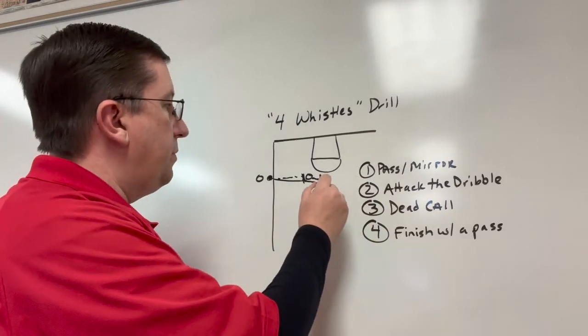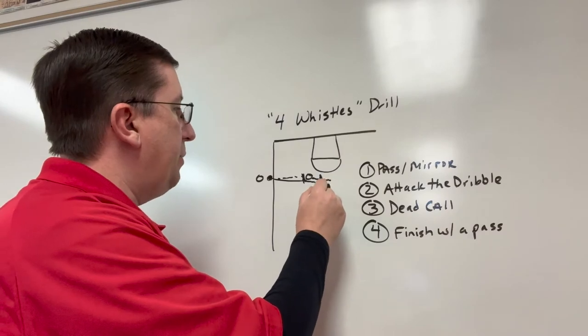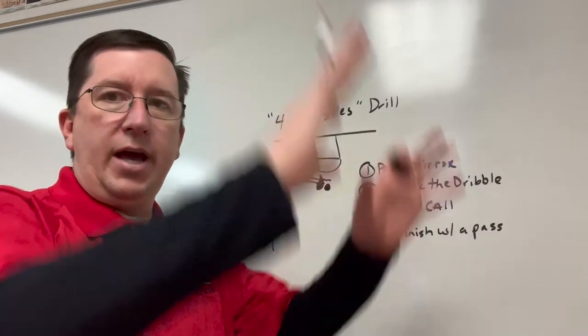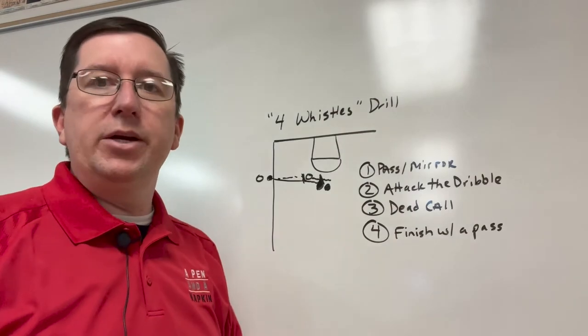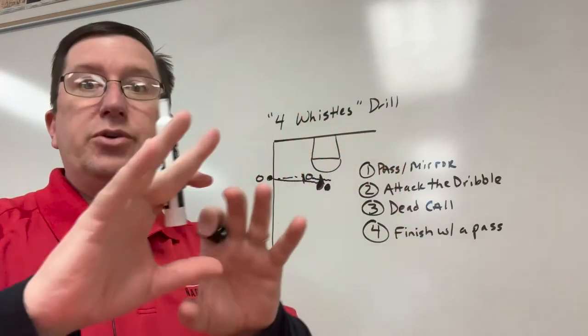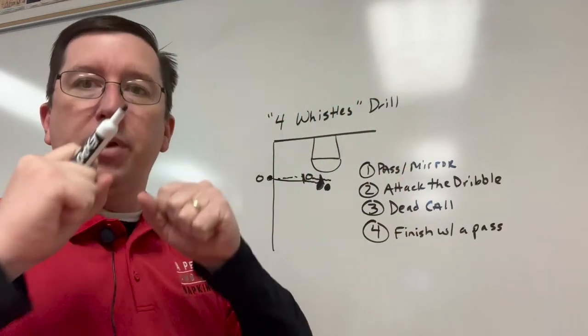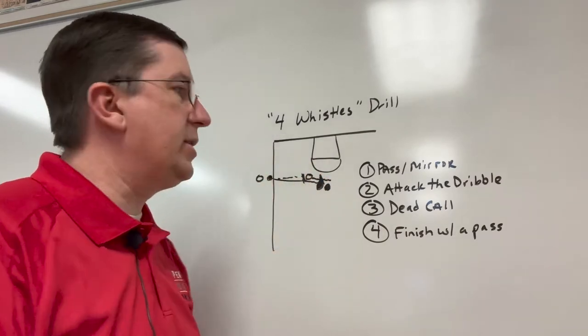On the third whistle, the offensive player is going to pick up the ball. The defensive player is going to call dead and we're mirroring it and doing our best to make sure that they can't make a pass out of it. Plus, offensively, we're staying strong with the basketball.